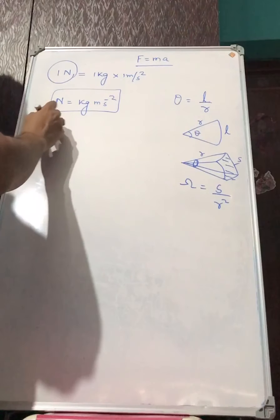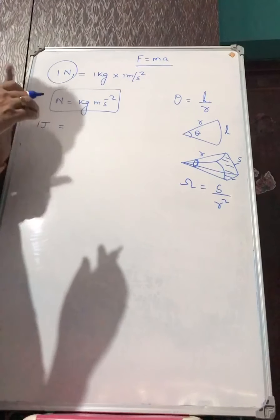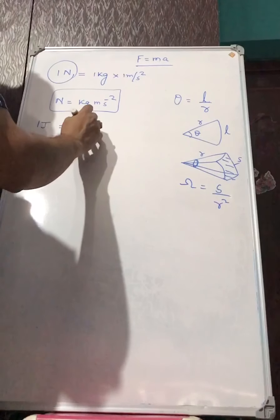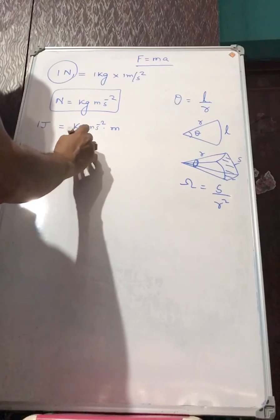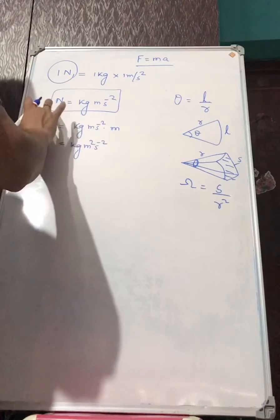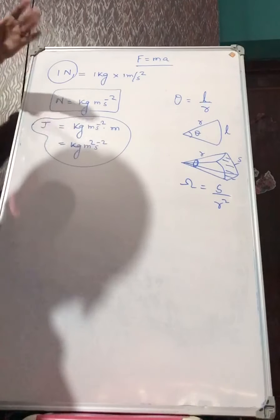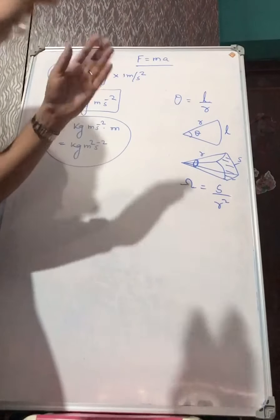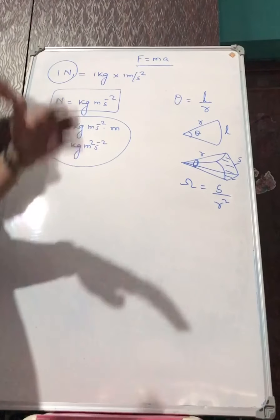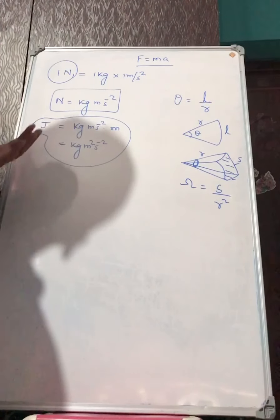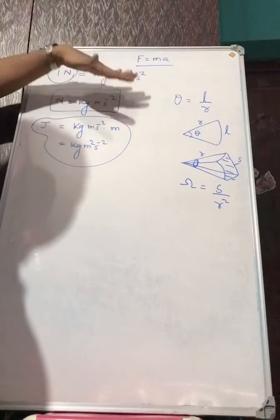Similarly, joule is the unit of energy or work — that is force times displacement. So joule equals kg·m/s² times m, which gives kg·m²·s⁻². Once we have the derived physical quantities and their formulas, we can find the unit by taking the help of the fundamental physical quantities.